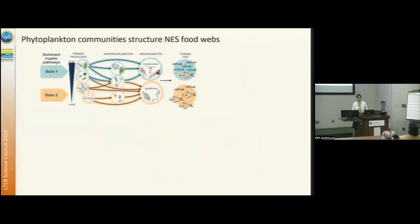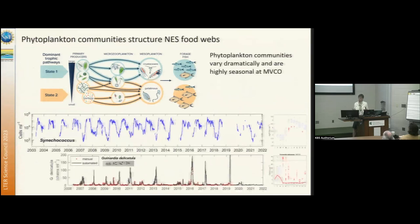Our food webs are based on microscopic primary producers. I'm going to highlight how we're looking at scaling in those communities today, but we're also looking further up the food web. The microscopic primary producers are extremely diverse and range a lot in size, taxonomy, and physiological capabilities. I'll highlight two end-member taxa that are really important in our system: very tiny picocyanobacteria, about one micron in size, and the larger chain-forming diatoms that dominate the biomass in the microplankton.